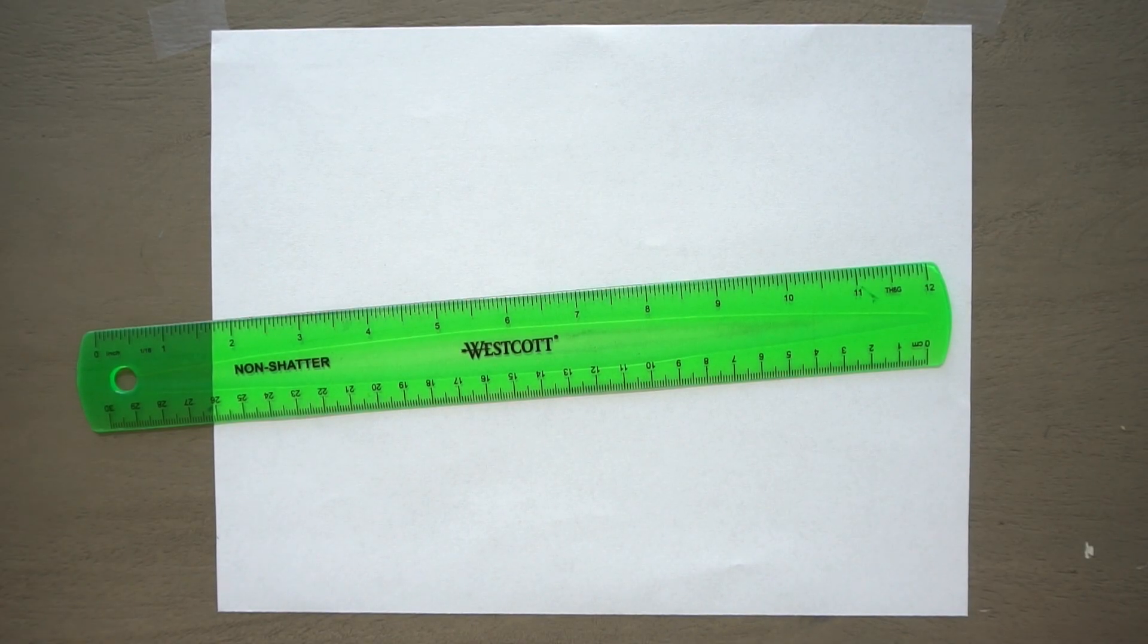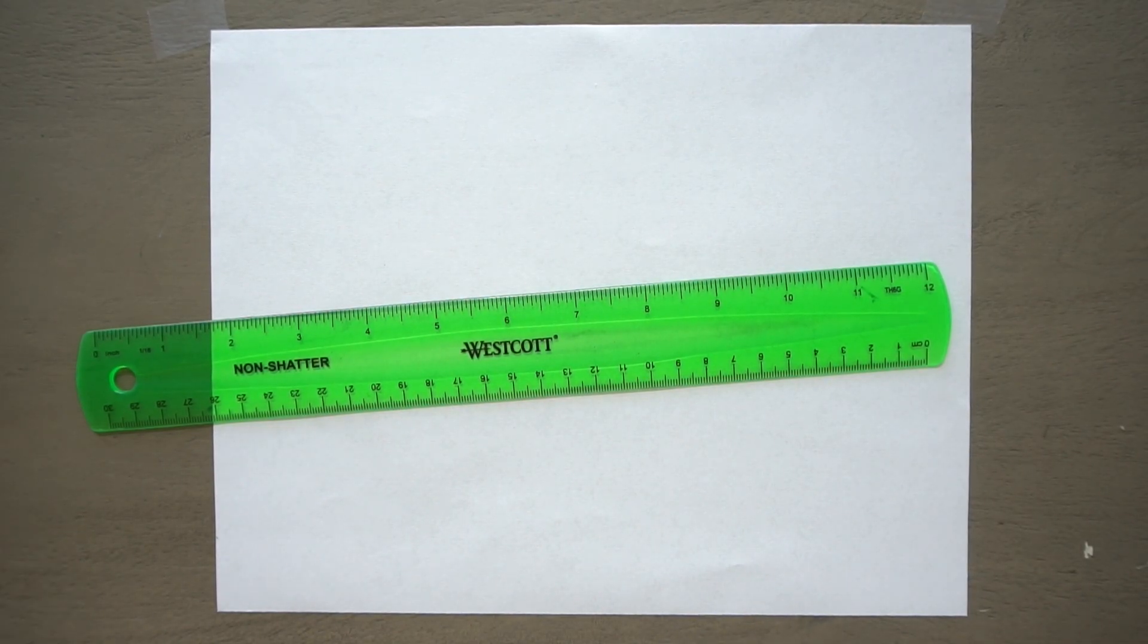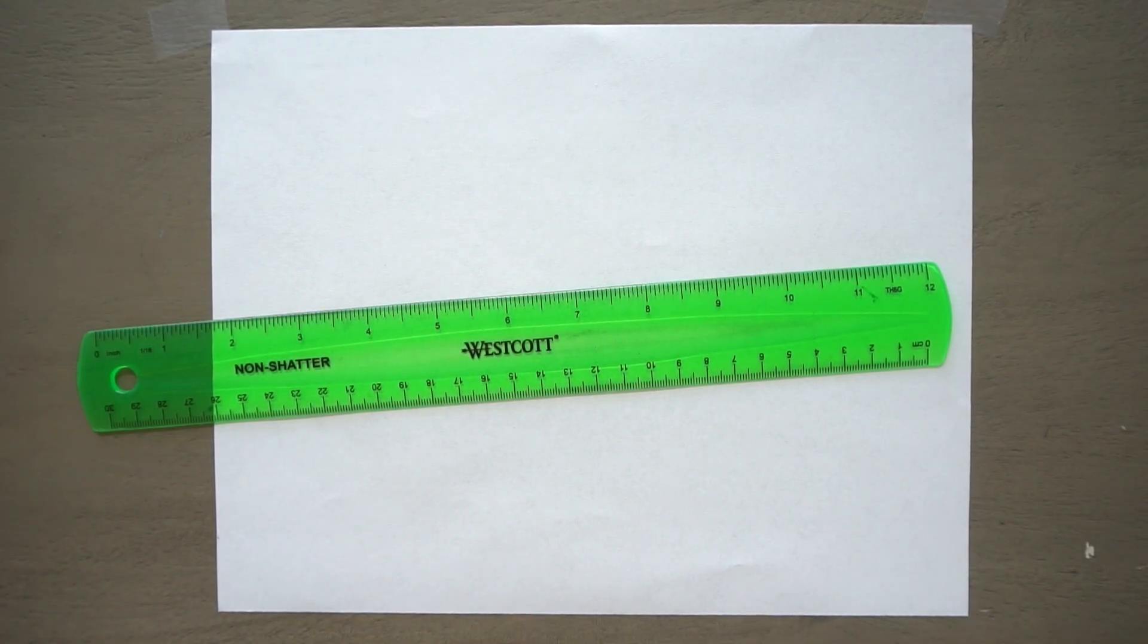Hi, welcome to Mr. Otter Studio. Today I'm going to show you how to draw a two-point perspective cube with part of it that has been kind of carved out.